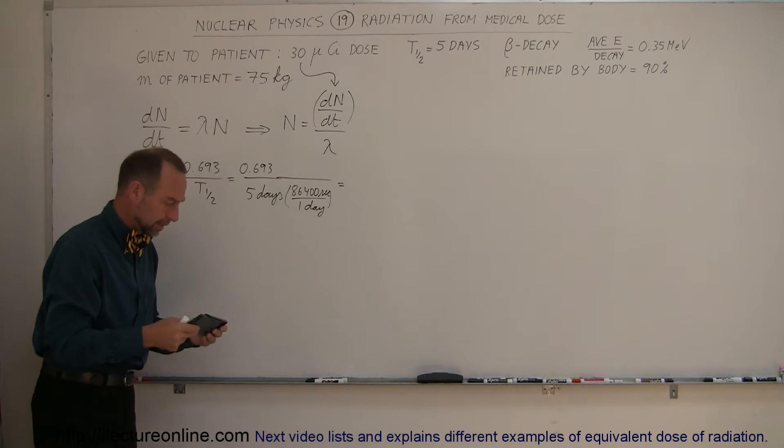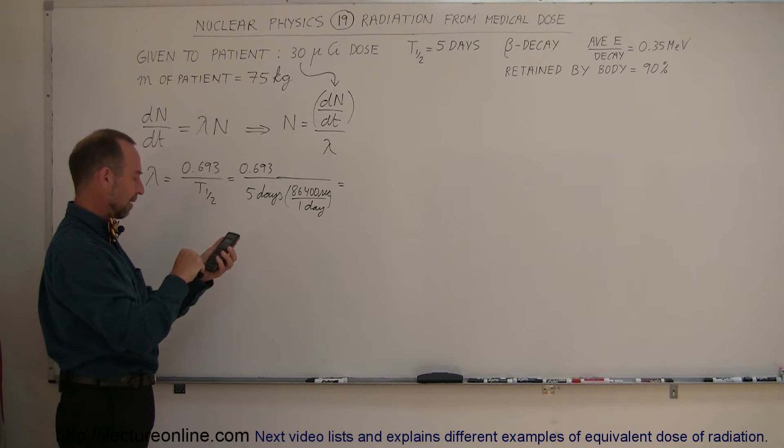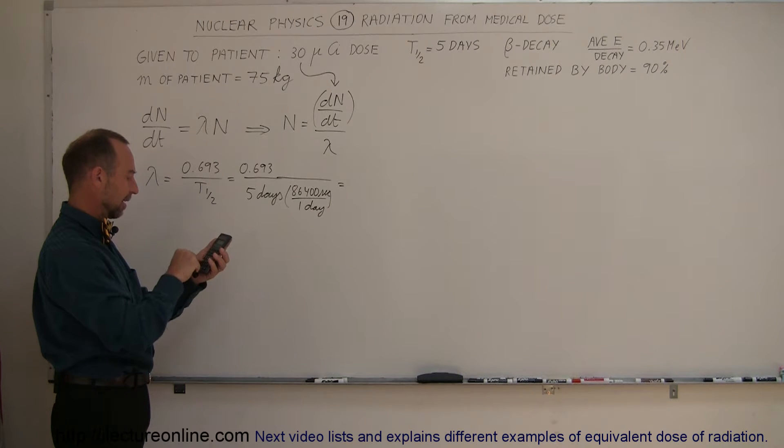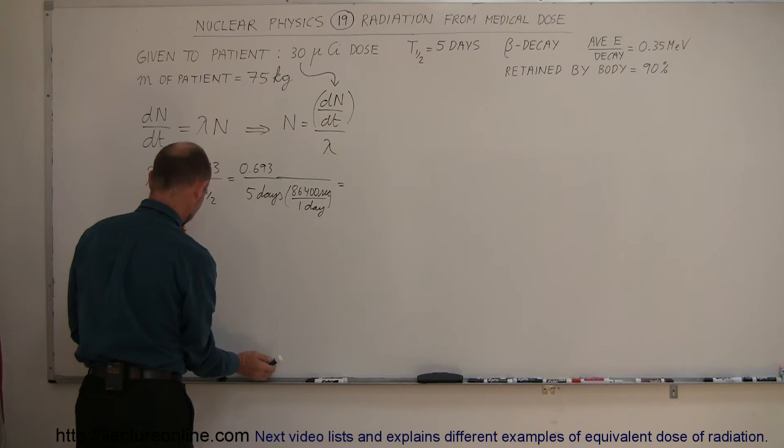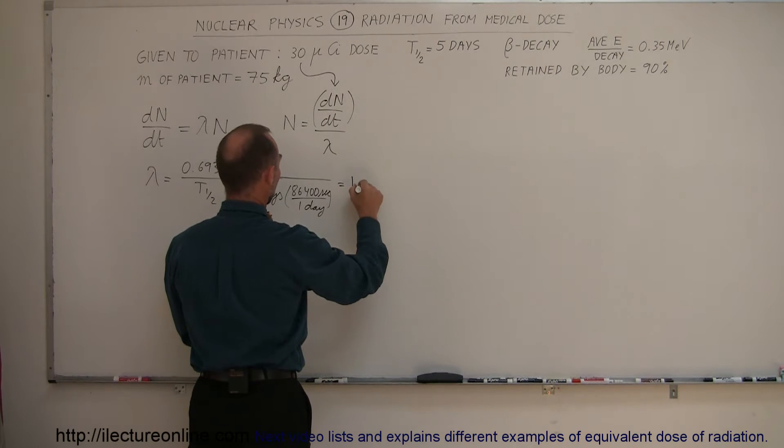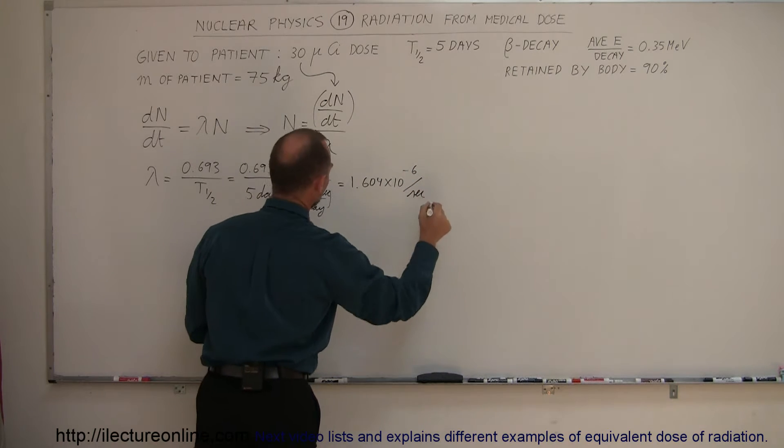Let's figure out what our decay rate is. I got my calculator with me: 0.693 divided by 5, divided by 86,400, and that gives us a decay rate of 1.604 times 10 to the minus 6 per second.